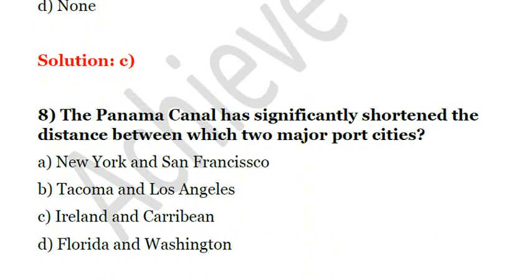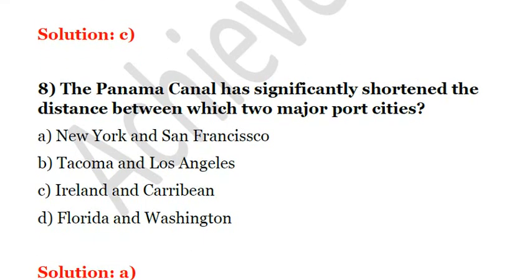The next question: the Panama Canal has significantly shortened the distance between which two port cities? A. New York and San Francisco. B. Tacoma and Los Angeles. C. Ireland and Caribbean. D. Florida and Washington. The Panama Canal has reduced the distance between New York, on the east of the USA, and San Francisco, towards the west. So the answer is A.